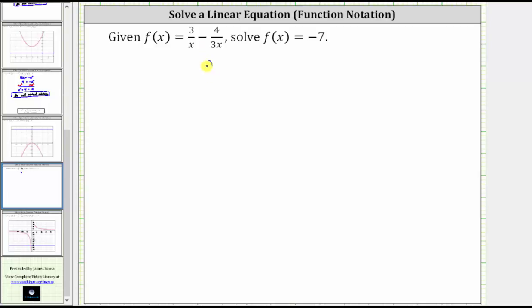So beginning with the given function, to solve f(x) = -7, we now substitute -7 for f(x), which gives us the equation -7 = 3/x - 4/(3x). Notice how this results in a rational equation.